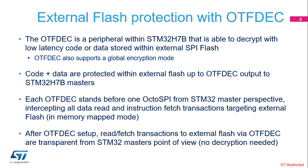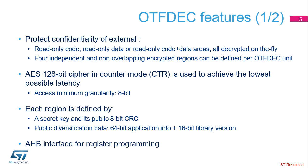The OTF-DEC is a companion IP of the OctoSPI peripheral. It intercepts any data read and instruction fetch that targets the external flash. Decryption is transparent to the Cortex-M7 core — data and/or instructions that the processor receives have been decrypted in hardware by the OTF-DEC unit. The OTF-DEC protects the confidentiality of external read-only code, read-only data, or read-only code-plus-data areas, decrypted on the fly. Four independent and non-overlapping encrypted regions can be defined. The AES 128-bit cipher in counter mode is used to achieve the lowest possible latency. Access minimum granularity is 8 bits.